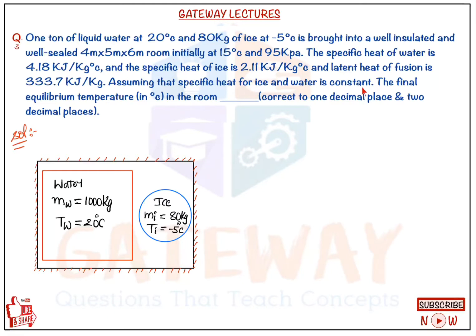The latent heat of fusion is 333.7 kJ/kg. We need to find the final equilibrium temperature correct to two decimal places. Assuming specific heat for ice and water is constant — this is important because specific heat generally depends on temperature for gases, but here ice and water are solid and liquid with no vapor or gas involved, so it is constant.